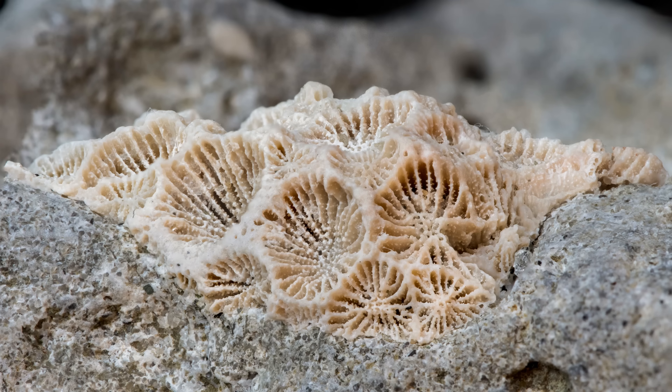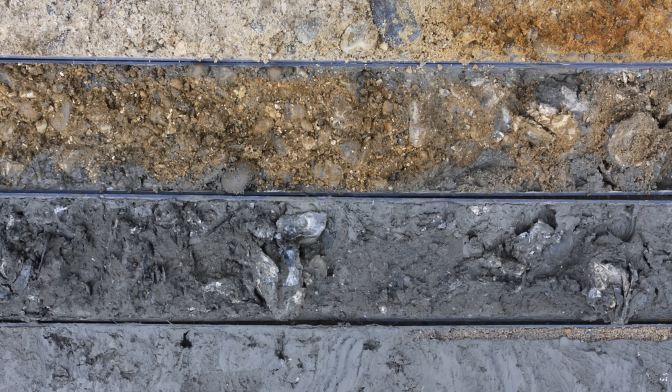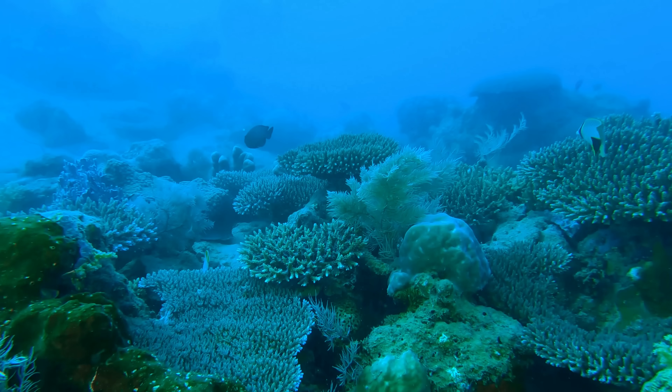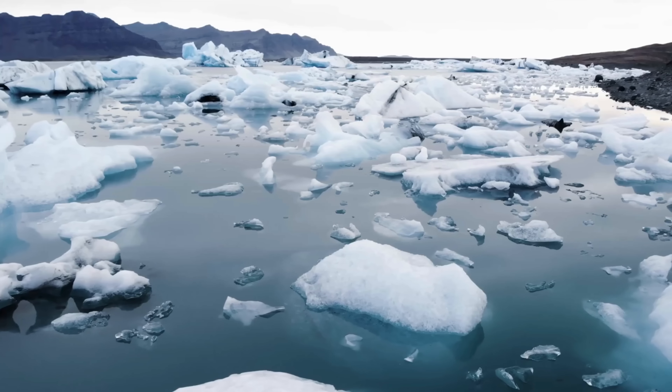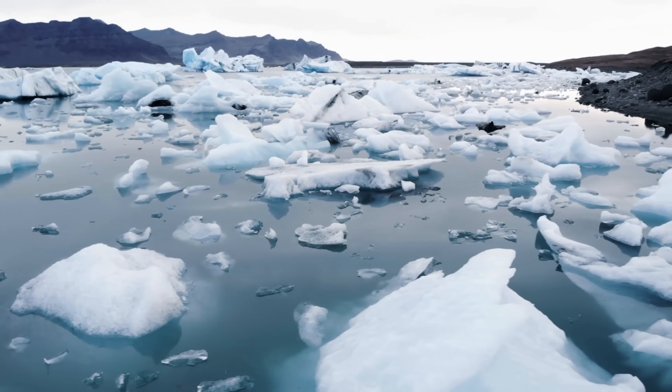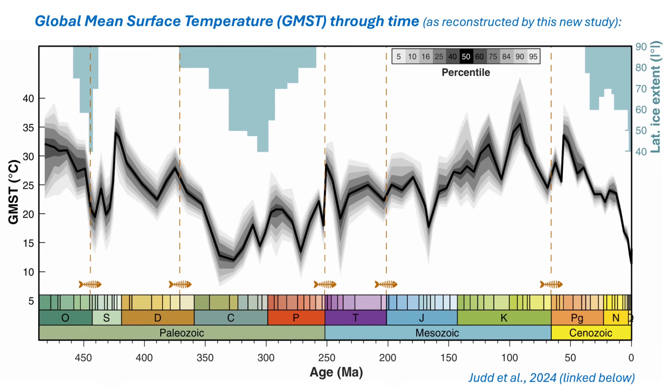Thankfully, something else was around taking those measurements for us: rocks. Rocks preserve physical, chemical, and biological signatures called proxies that tell us about the conditions in which they formed. Climate scientists use all sorts of proxies, like ice cores, fossilized corals, and ocean sediments. Ancient records like these are key to our understanding of our climate's distant past, teaching us how our atmosphere's composition has changed, how the ocean's pH has varied, how oceans have risen and fallen — and, like in this study, how temperatures have varied.